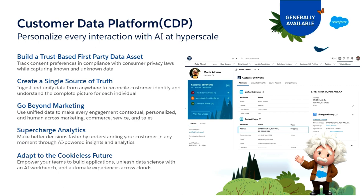Depending on your needs and use cases, you can define how that unified identity gets generated across your different source systems. Once the data is unified, you can create segments, calculated insights, and metrics, then activate to an S3 bucket, Marketing Cloud, or other Salesforce assets like Commerce. You can also use that rich data and identity graphs to power AI, bringing together all the different shards of identity across your systems.